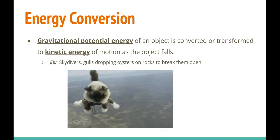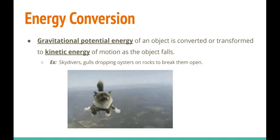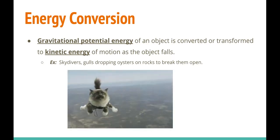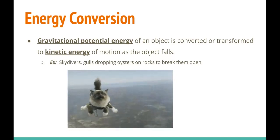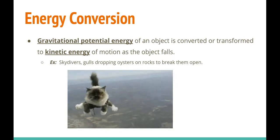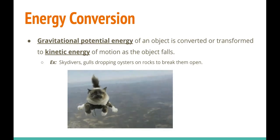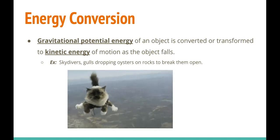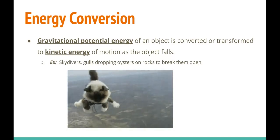The same applies to seagulls dropping oysters on rocks to break them open. Right before a seagull drops an oyster, you can measure the amount of gravitational potential energy, and that should equal the kinetic energy right before the oysters hit the rocks below. So this slide is just to say that for the most part, gravitational potential energy usually just transforms into kinetic energy.